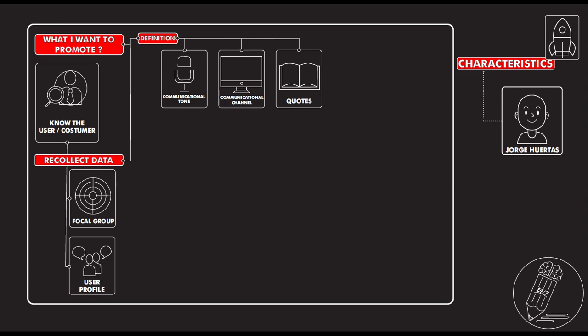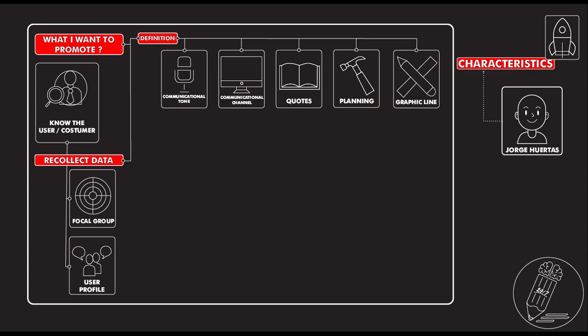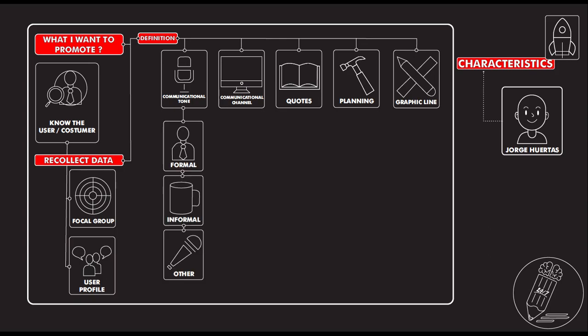We are going to see every one of these components in depth. You also need to make the planning and the schedule — how you are going to execute your strategy. And of course, very important: the graphic line, which represents the branding of your product, service, or campaign. If you don't know what a graphic line is, please check our content on that topic, because it will give the identity to your promotion.